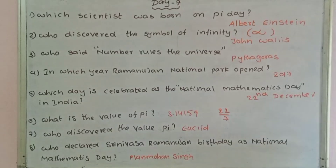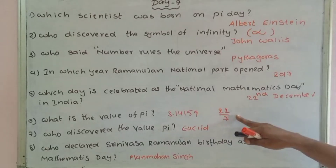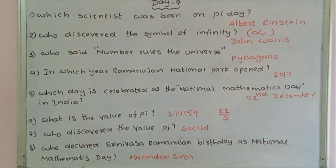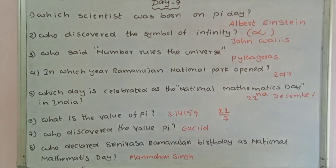What is the value of Pi? The value of Pi is 3.14159, also written as 22 by 7. Who discovered the value of Pi? The answer is Euclid.